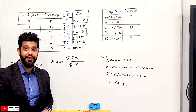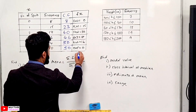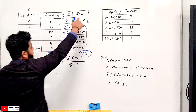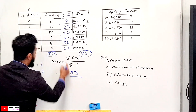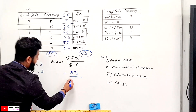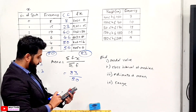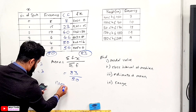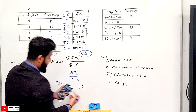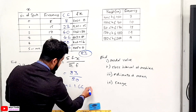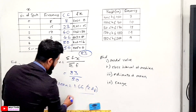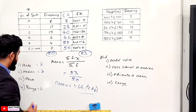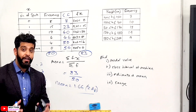We've totalled the FX column and got 83. The frequency total, also taken from there, is 50. So it's 83 divided by 50. Put that into your calculator — 83 divided by 50 gives us a mean of 1.66, already rounded to two decimal places. That is the mean: 1.66.